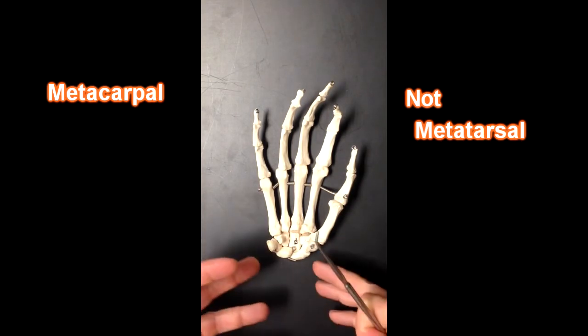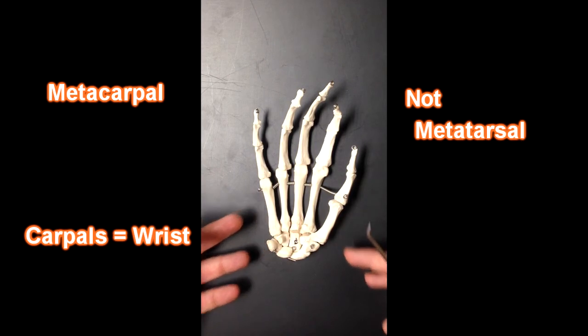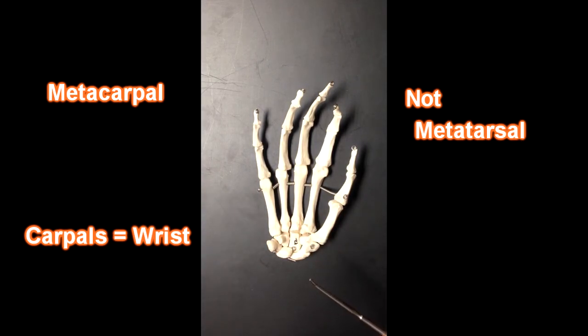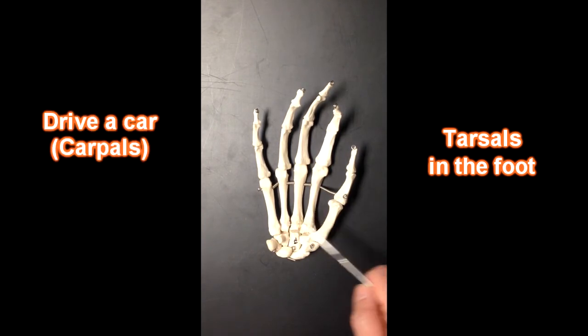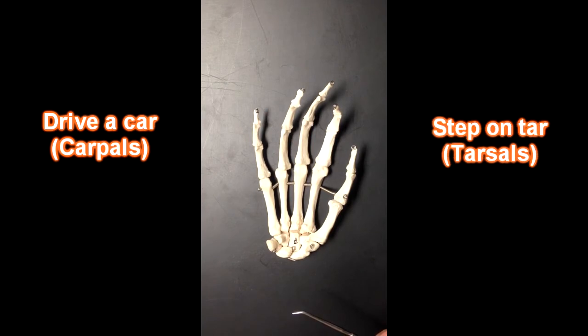Carpals refers to wrist, metacarpals refers to the bones in the palm of the hand. Tarsals would be found in the foot, and one way to remember that is you drive a car with your hands on the steering wheel, and you step on tar with your feet. So tarsals, feet, carpals, hand.